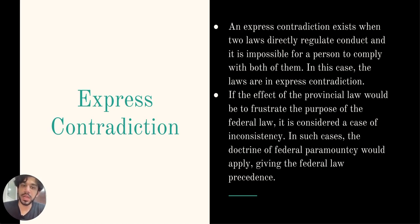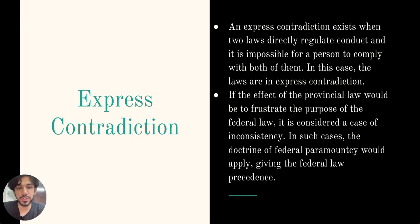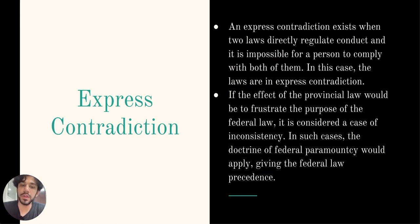It is possible for there to be overlapping federal and provincial laws that can both be complied with, but do not directly contradict each other. However, if the effect of the provincial law would be to frustrate the purpose of the federal law, it is considered a case of inconsistency. In order to determine whether this is the case, it is necessary to identify the purpose of the federal law and the effect of the provincial law on it. If the provincial law undermines or obstructs the purpose of the federal law, it is considered inconsistent and the doctrine of federal paramountcy would apply, giving the federal law precedence.